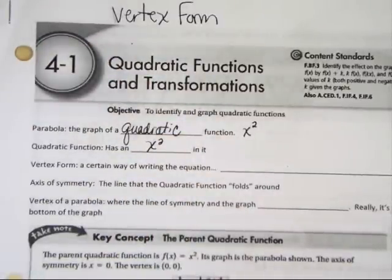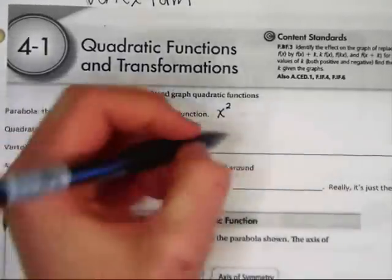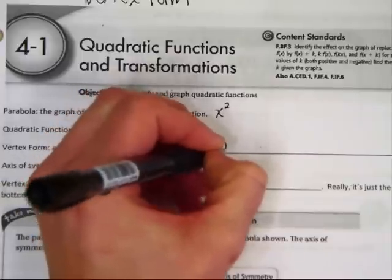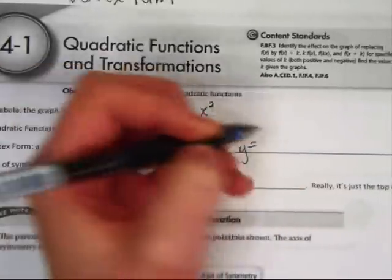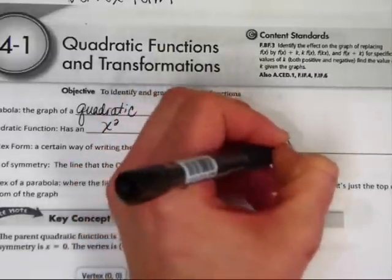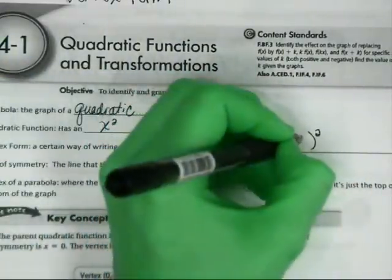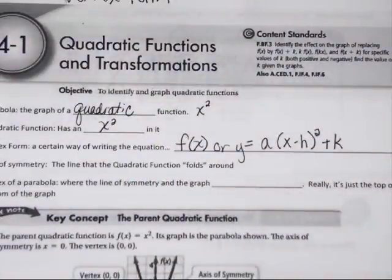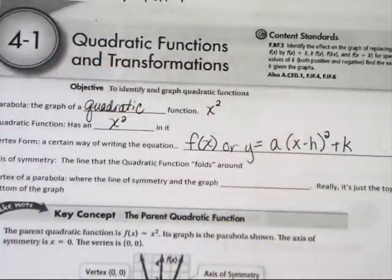Vertex form is the first thing you're going to learn about. Vertex form is a certain way of writing the equation, and it usually looks like this. It will be f of x or y equals, there will be a number, there will be a set of parentheses, the set of parentheses will be squared. You'll do x minus h and then plus k in the back. It should look very familiar to you as the absolute value ones did.